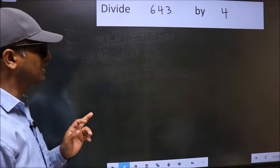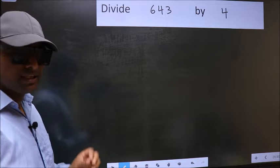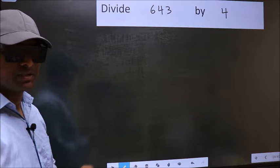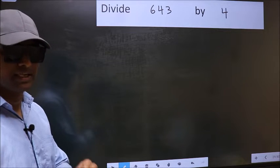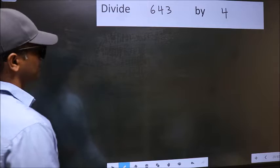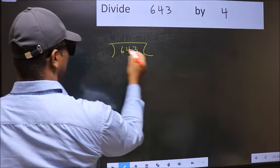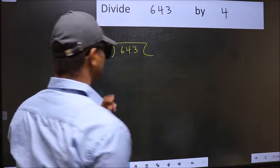Divide 643 by 4. While doing this division, many do this mistake. What is the mistake that they do? I will let you know, but before that we should frame it in this way: 643 and 4.